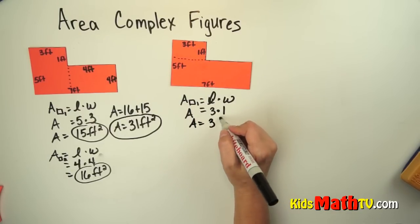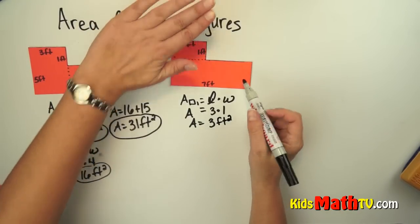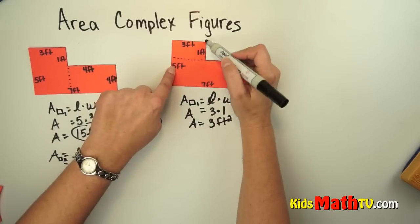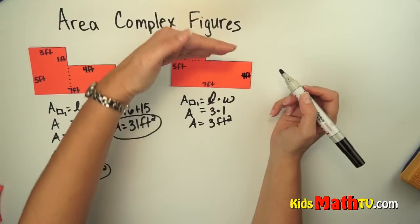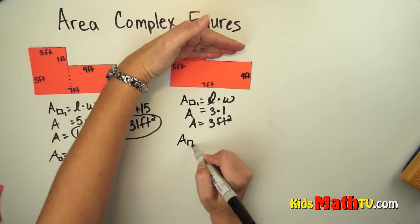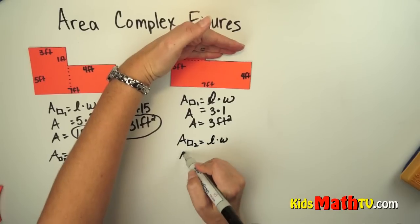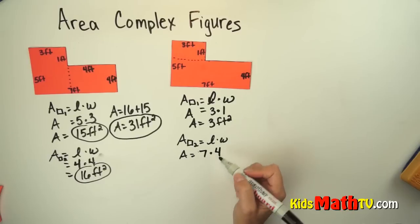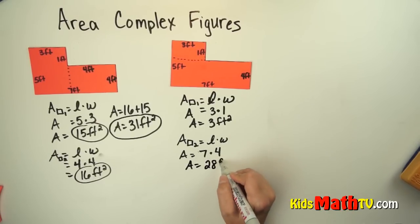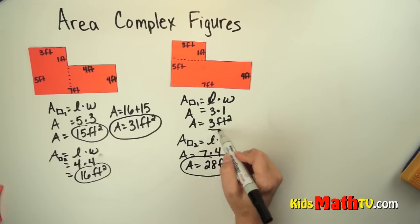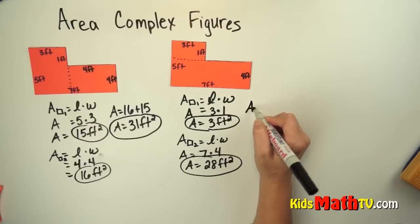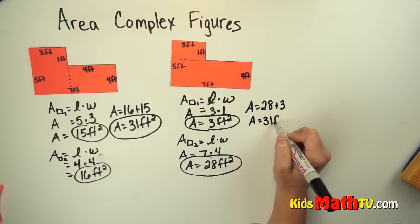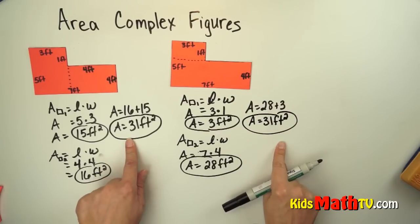The area of the small rectangle is 3 square feet. Now I want to find the area of the larger rectangle, and again this one is not labeled. This 5 means this whole side, so I have to take 5 feet and subtract 1 foot — this rectangle is actually 4 feet, not 5 feet. The area of rectangle 2 is length times width. The length is 7 and the width is 4, which comes out to 28 square feet. So we add those together: 28 plus 3 gives an area of 31 square feet — the same answer either way we split it up.